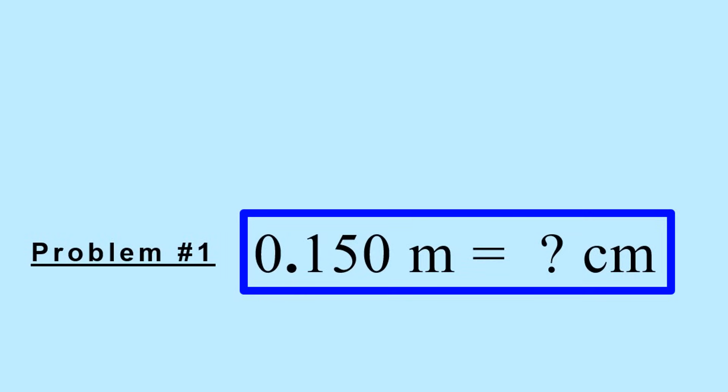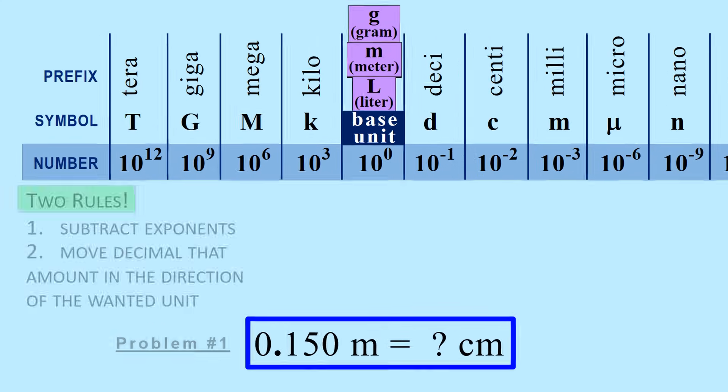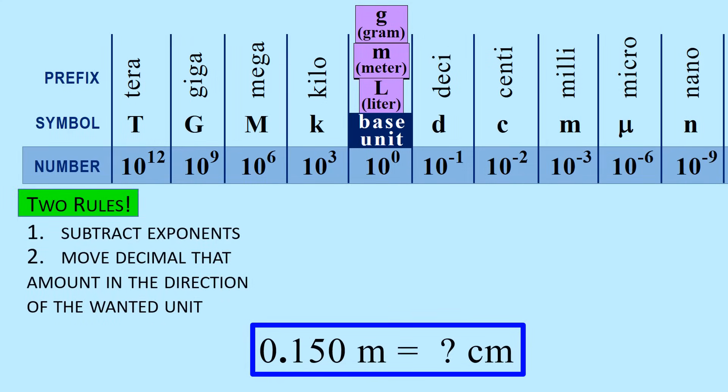Our first example is converting 0.150 meters to centimeters. Note that when a symbol is by itself, it is always a base unit, in this case meter. The conversion follows two simple rules. First is to subtract exponents. So we have meter with an exponent of 0, and we want to get to centi with an exponent of negative 2. Write down the exponents and subtract, giving a difference of 2.